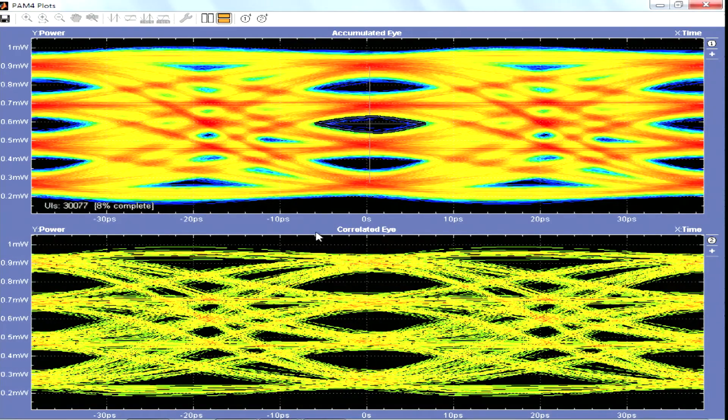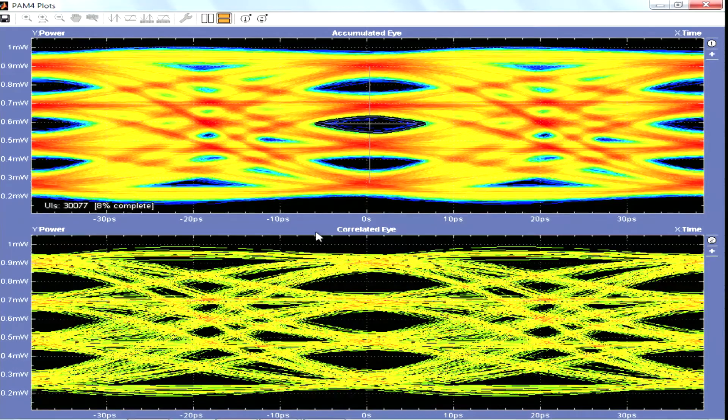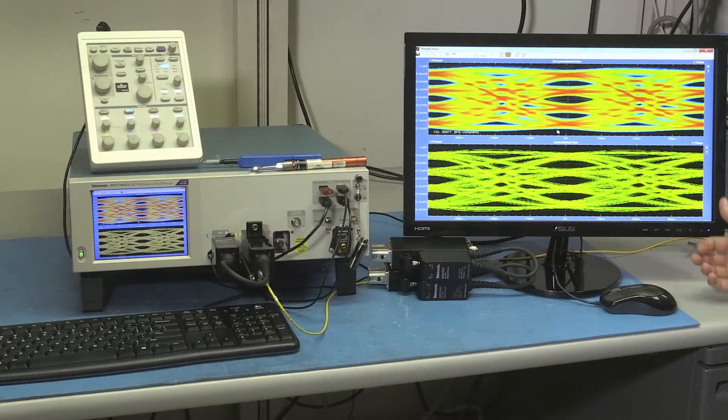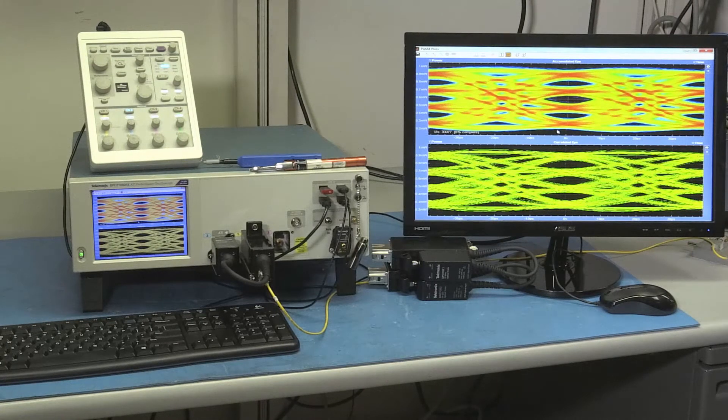So the accumulated eye as well as the correlated eye with the Gaussian noise removed. That's how easy it is and how fast our real-time solution is in getting you an eye diagram and an impression on how your signal looks like.